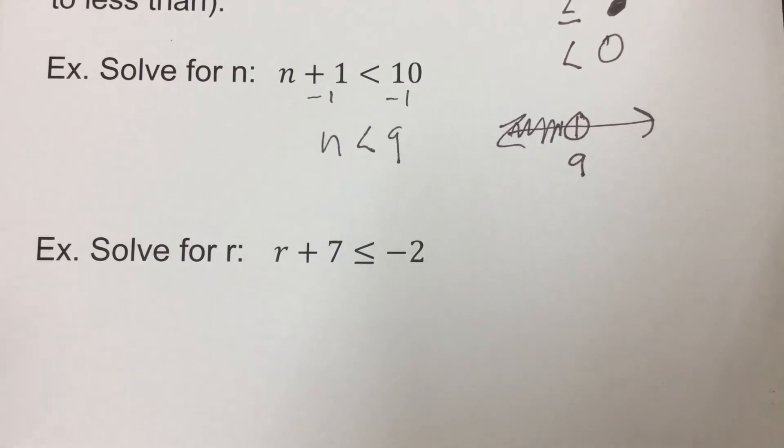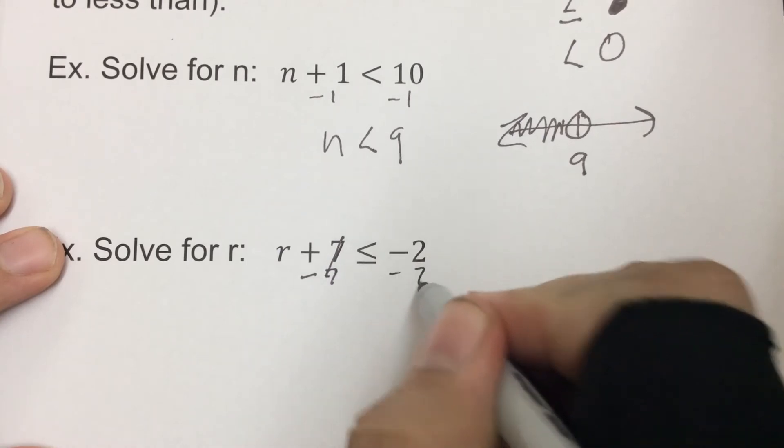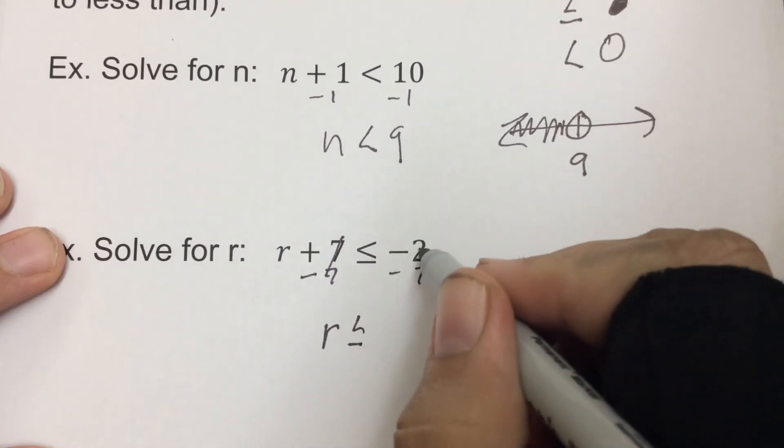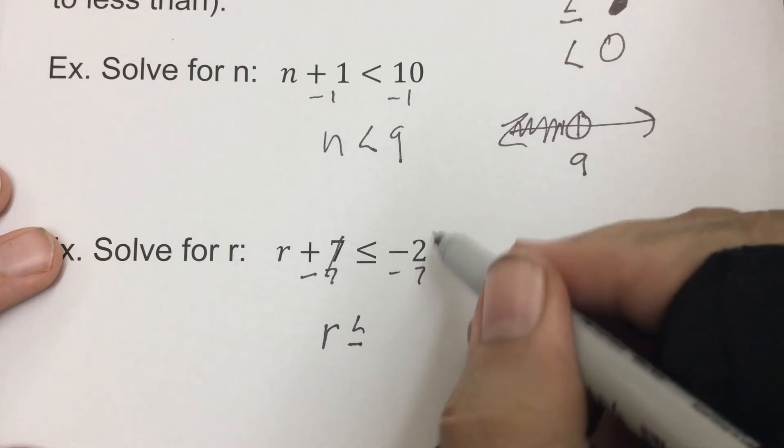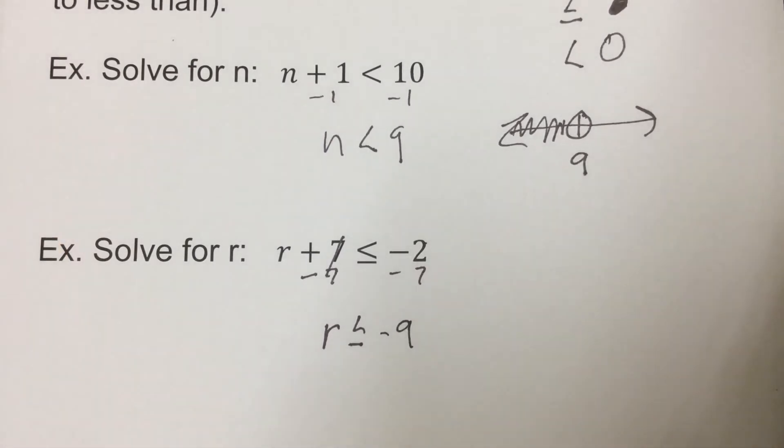r plus 7 is less than or equal to negative 2. So again, subtract the 7 to cancel it. So r is less than or equal to, now negative 2 minus 7: we have two negatives here, negative 2 and negative 7, make negative 9. So remember, same sign, just add them together and then they're going to be that sign. So r less than or equal to negative 9.